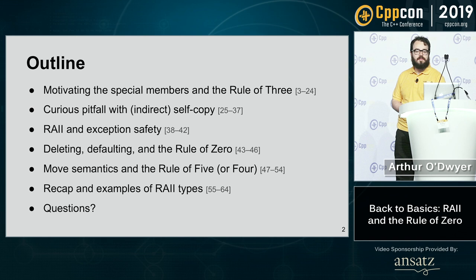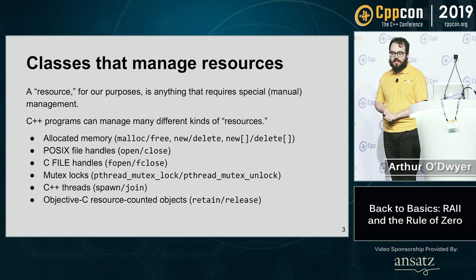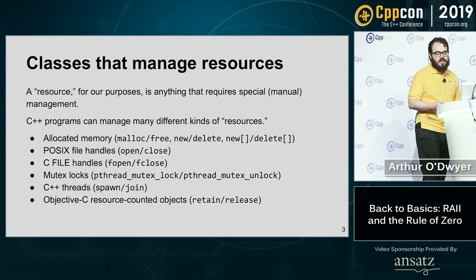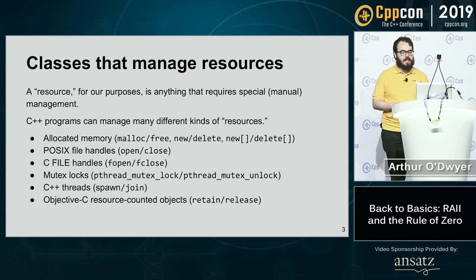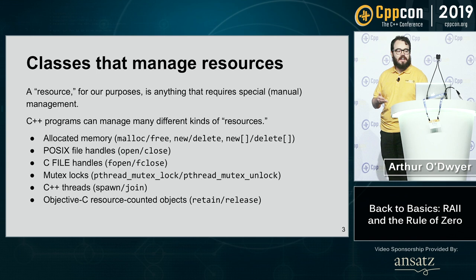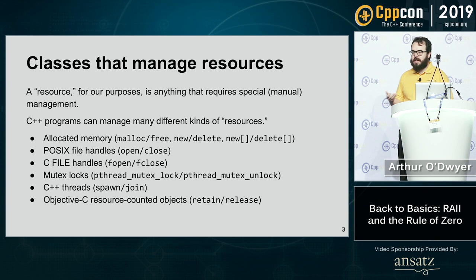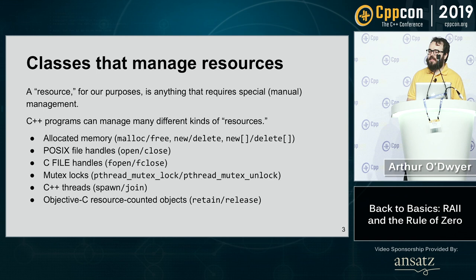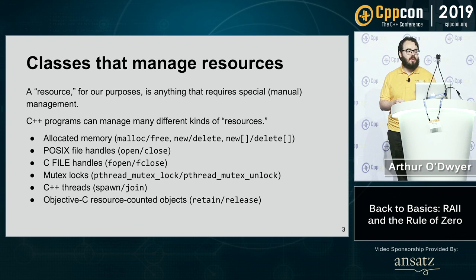I'm going to be talking about classes that manage resources. A resource is what the R in RAII stands for. A resource, for our purpose, is anything that requires special manual management. This could be manual memory management — malloc and free, new and delete — where if you have a pointer from new, you need to call delete on it at some point. It also applies to POSIX file handles, C FILE handles, and mutex locks.